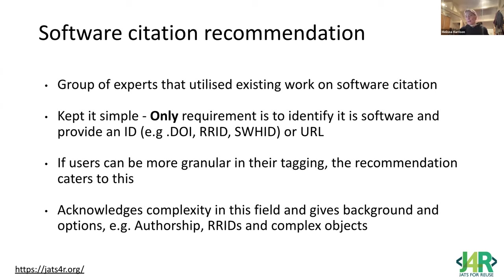We provided enough of a recommendation so that users can be more granular in their own tagging if they want to, and the recommendation caters for that. It also acknowledges the complexity in this field. One thing we always struggled with at eLife was if you can't get an author for a GitHub repo, for instance — and it acknowledges that could happen — maybe using a username or a handle as an author is okay, because it's still data. There are complex objects nowadays: are they software, are they data? JATS4R doesn't editorialize at all.